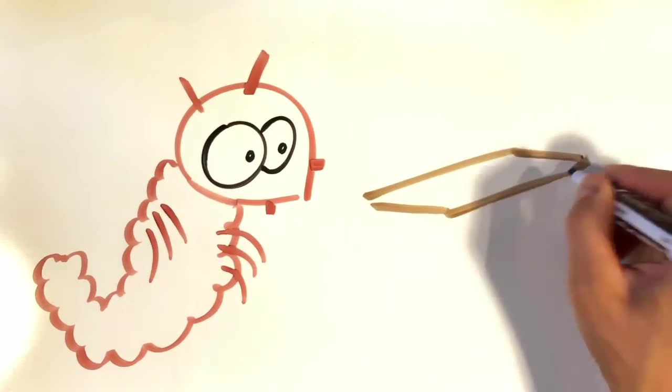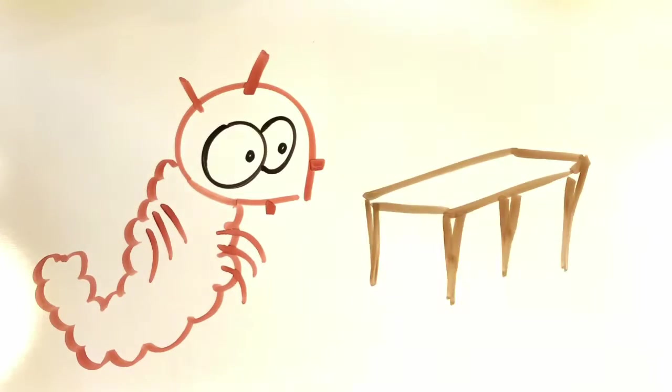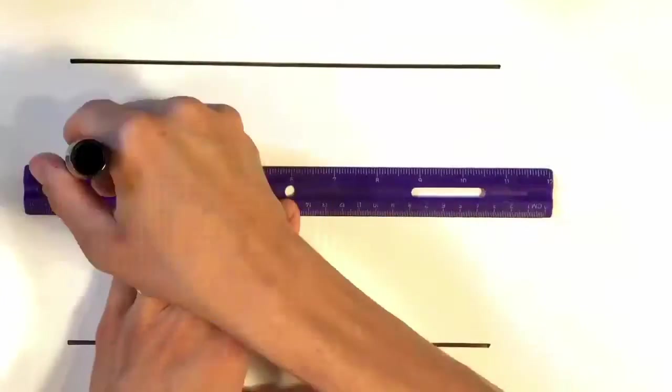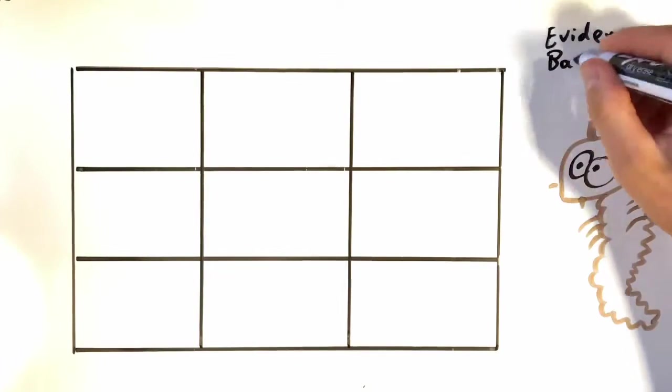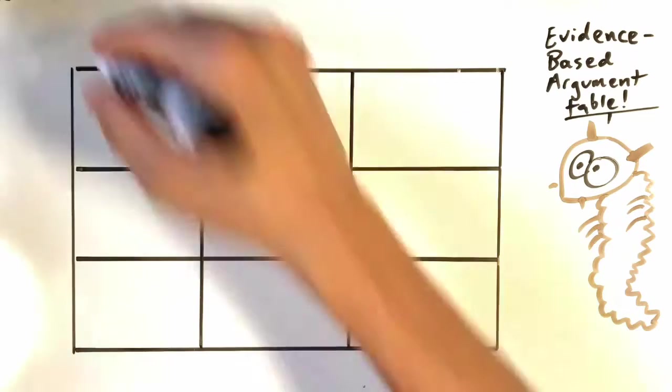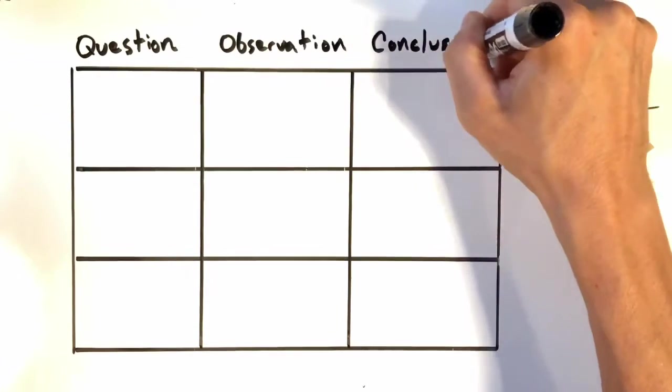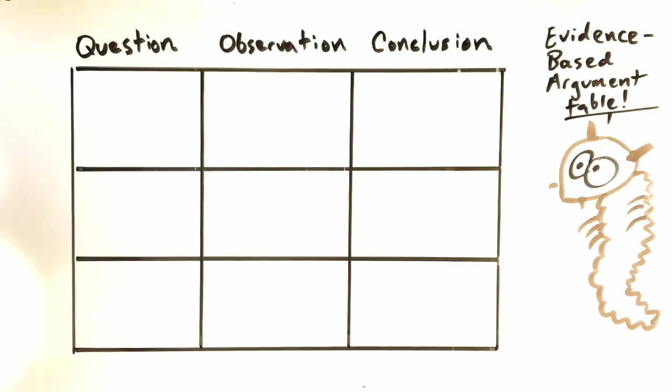At this point, let's summarize our data using a table. Not that kind of table. Let's put together an evidence-based argument table. Across the top, we'll identify the question that we're trying to answer, the observation that we made, and the conclusion that we can draw based on that observation. And on the leftmost column, we'll identify our questions, starting with the matter movement question, followed by the matter change question, and then let's also add the energy question.